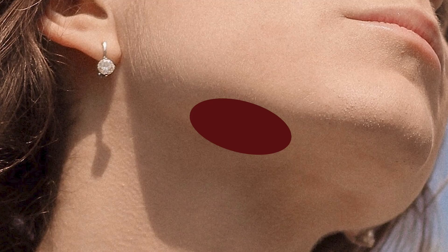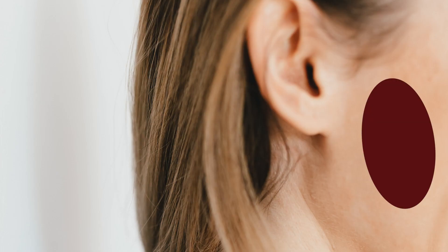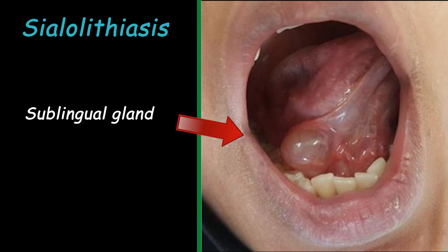Other salivary glands include the parotid glands on the side of the face, which are the largest salivary glands in humans, and the sublingual glands, which are located under the tongue.